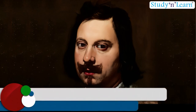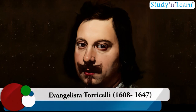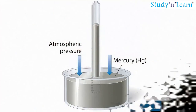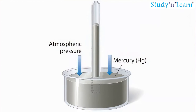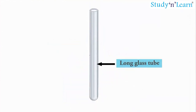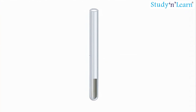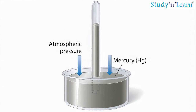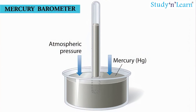The Italian scientist Evangelista Torricelli (1608 to 1647) devised for the first time a method for measuring atmospheric pressure. A long glass tube closed at one end and filled with mercury is inverted into a trough of mercury. This device is known as a mercury barometer.